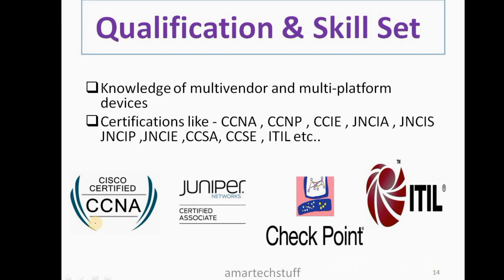A network engineer should have knowledge of multi-vendor and multi-platform devices. Vendors include Cisco and Juniper, and platforms include routers, switches, firewalls, and load balancers. For certifications, most people start with CCNA, then move to CCNP and CCIE (the expert level for Cisco). For Juniper, there are JNCIA, JNCIS, JNCIP, and JNCIE certifications. Most networks you will find use Cisco, though Juniper certifications are also excellent.